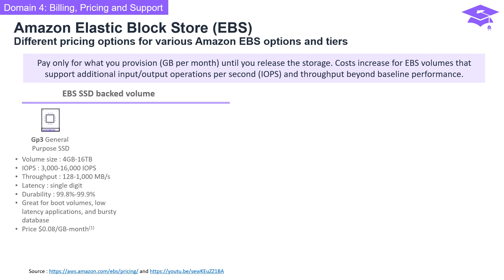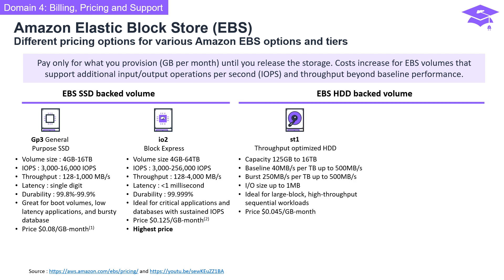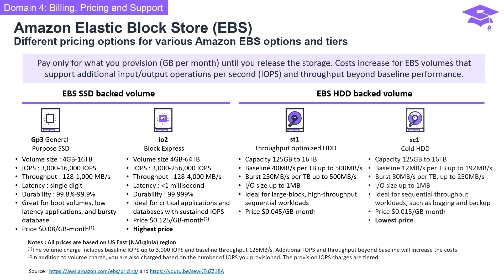For EBS volumes: GP3 General Purpose SSD is ideal for boot volumes, low-latency applications, and bursty databases. IO2 Block Express, also SSD-backed, has the highest price among EBS storage and is ideal for critical applications and databases with sustained IOPS. For HDD-backed options, ST1 Throughput Optimized HDD is ideal for large block, high-throughput sequential workloads. SC1 Cold HDD has the lowest price among EBS storage, ideal for sequential throughput workloads such as logging and backup.